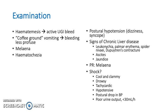Check for postural hypotension — do they feel dizzy or have they collapsed? Look for signs of chronic liver disease such as leuconychia, palmar erythema, spider naevi, Dupuytren's contracture, ascites, or jaundice. Note that there are other signs of chronic liver disease such as raised JVP.